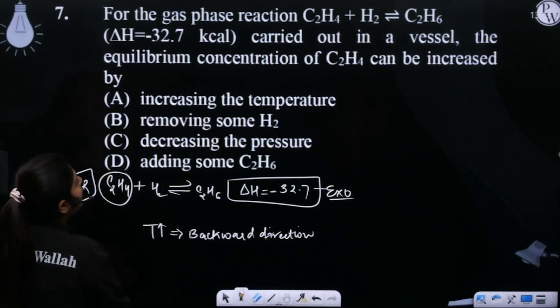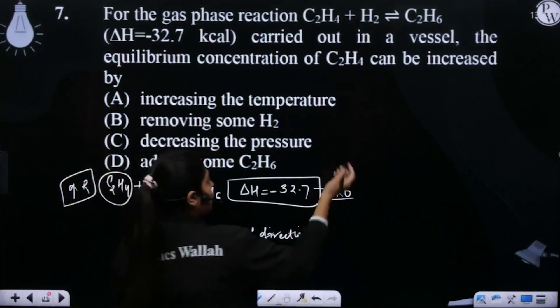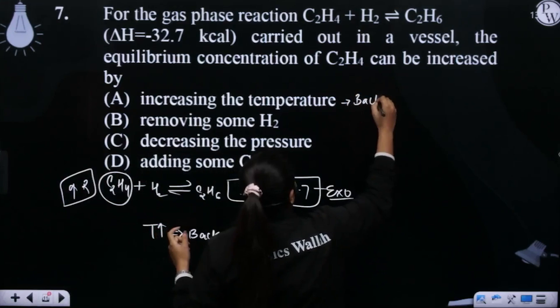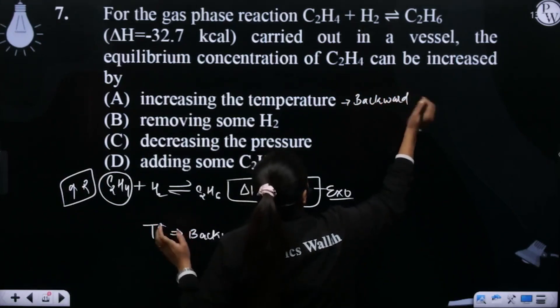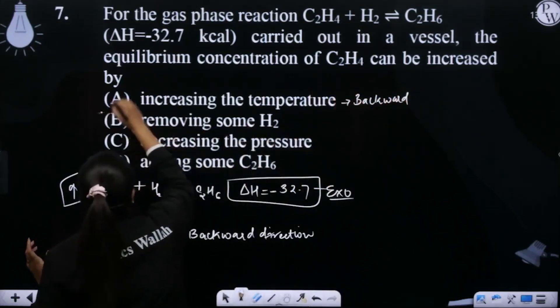What will C2H4 do? Increase. The shift goes backward, so C2H4 will increase. Therefore, option A is correct.